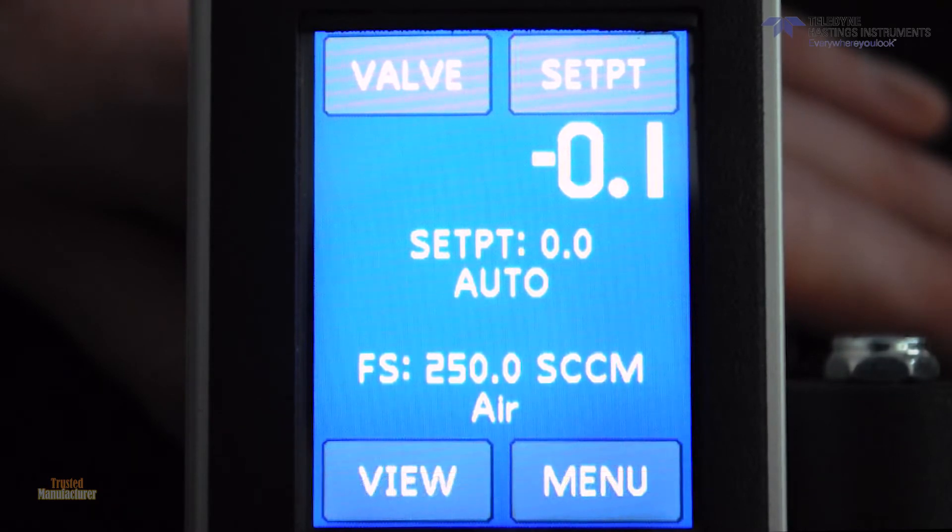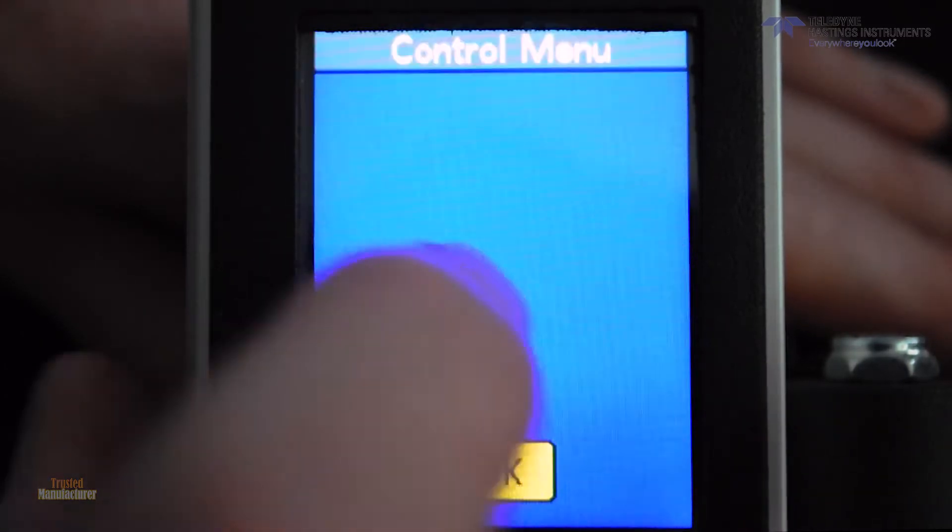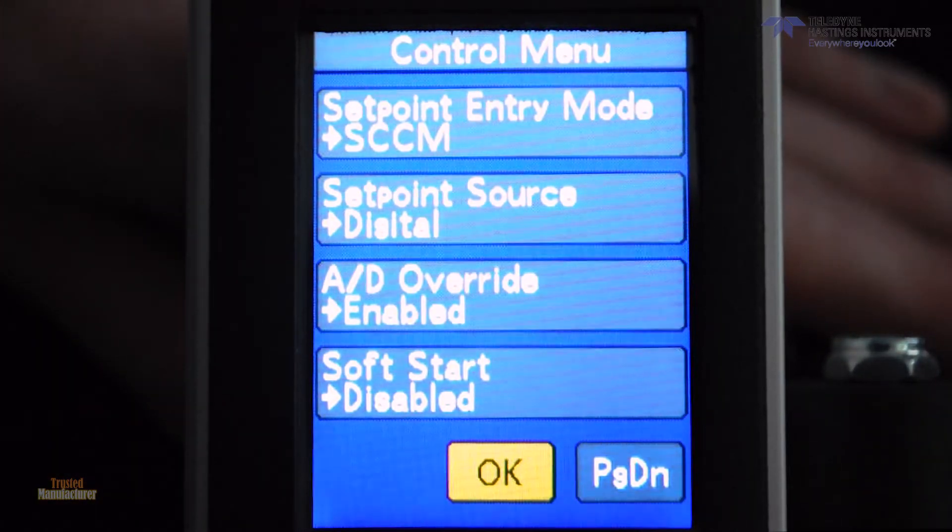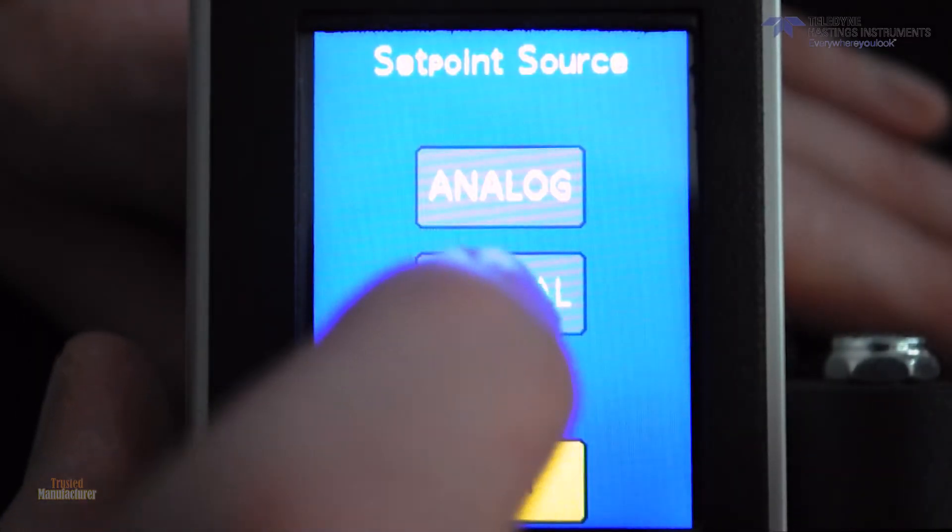So to do that, I go here to menu, flow control, and I'm going to make the set point source now analog.